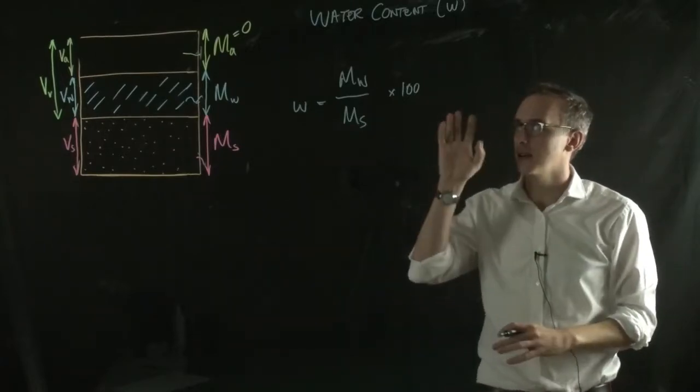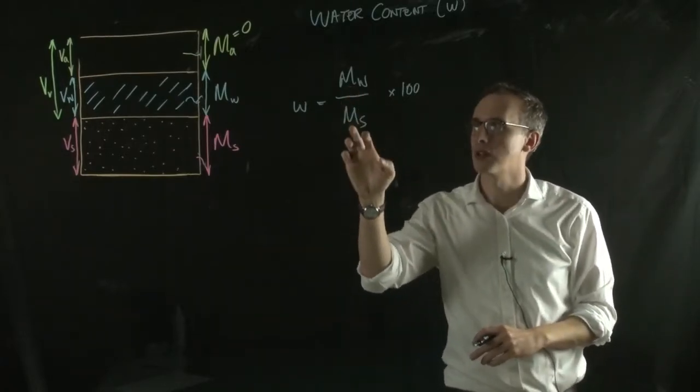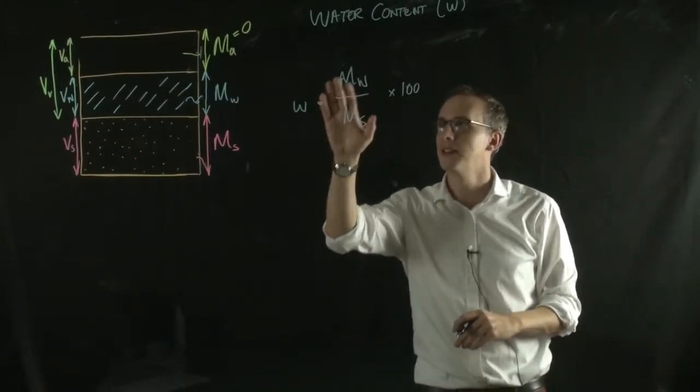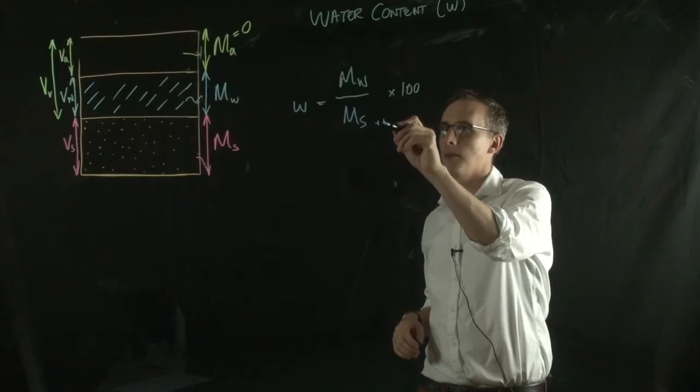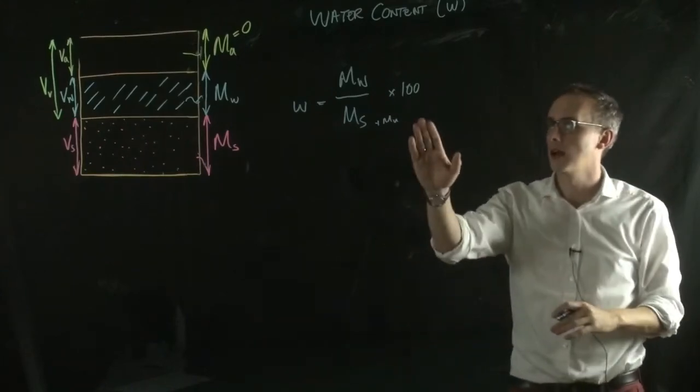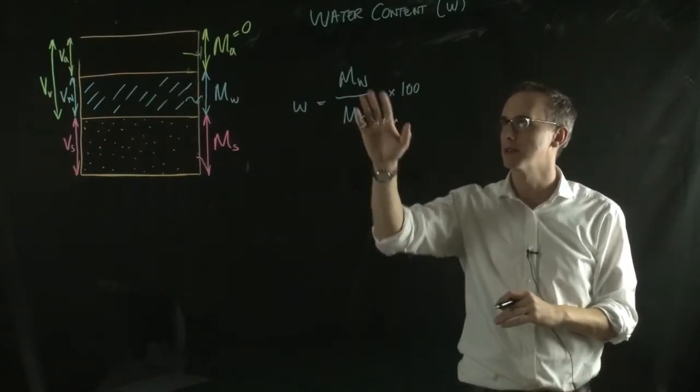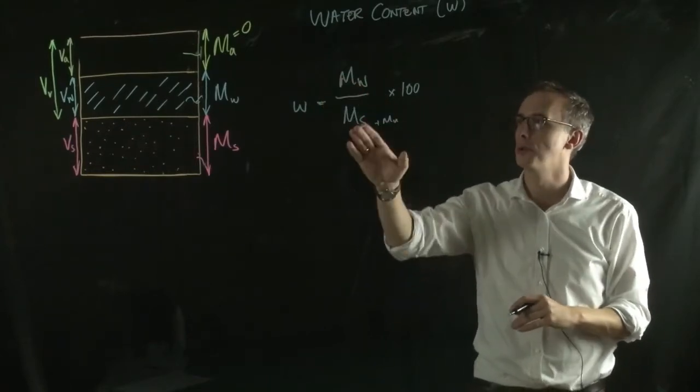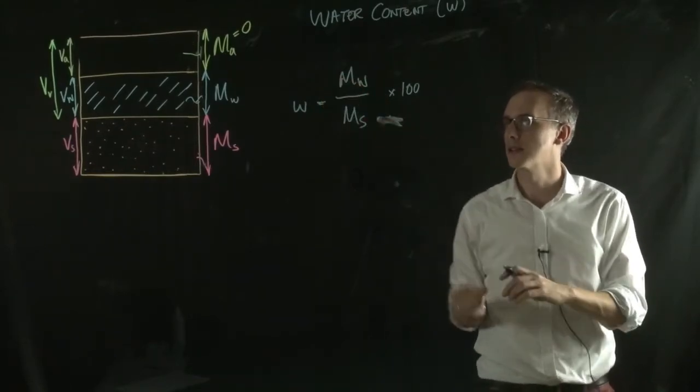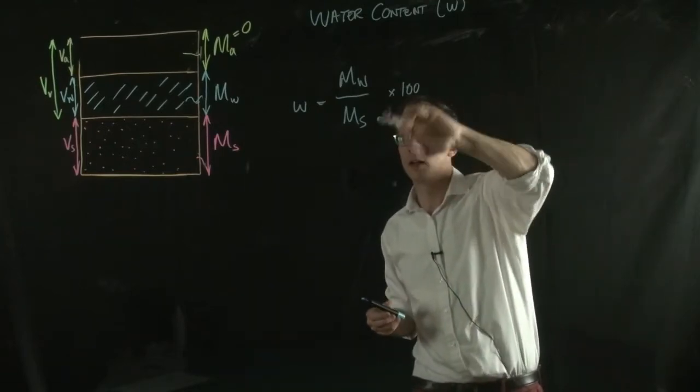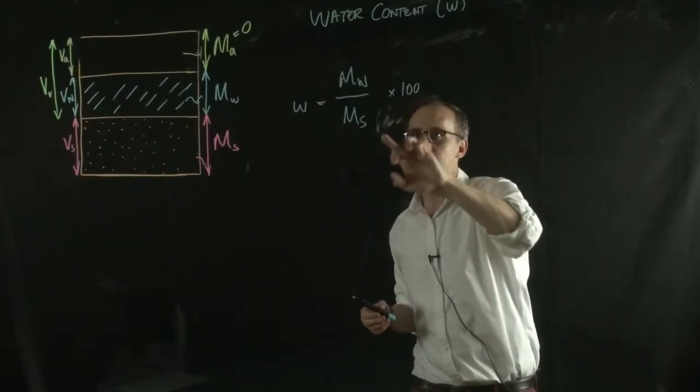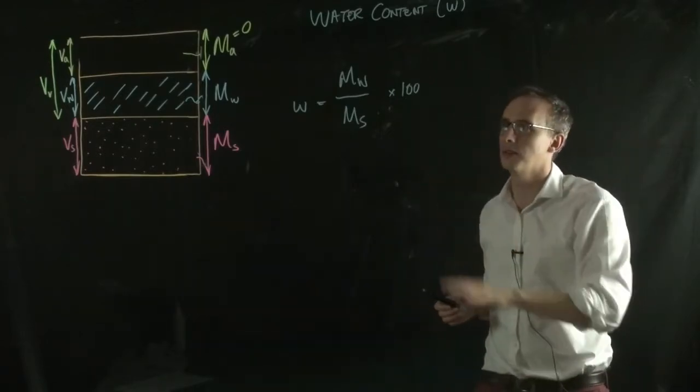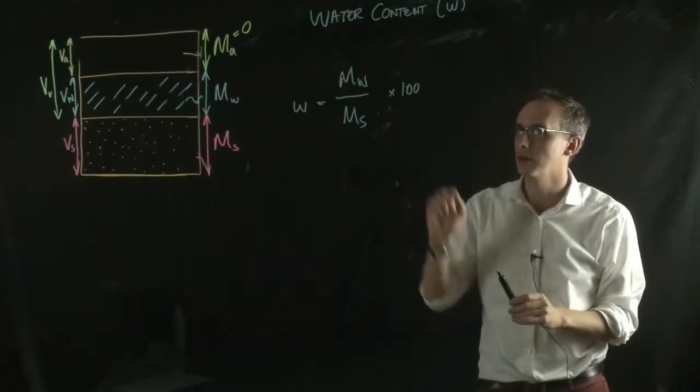A common misconception here is that it's the mass of the water over the total mass of the soil, but in this case it would be ms plus mw, and that's wrong. It's not the total mass, so it's not a fraction of the total mass, it's just a ratio between the mass of the water and the mass of the solid. So it's not a percentage of the total mass, and that's a common misconception, so make sure you don't confuse that.